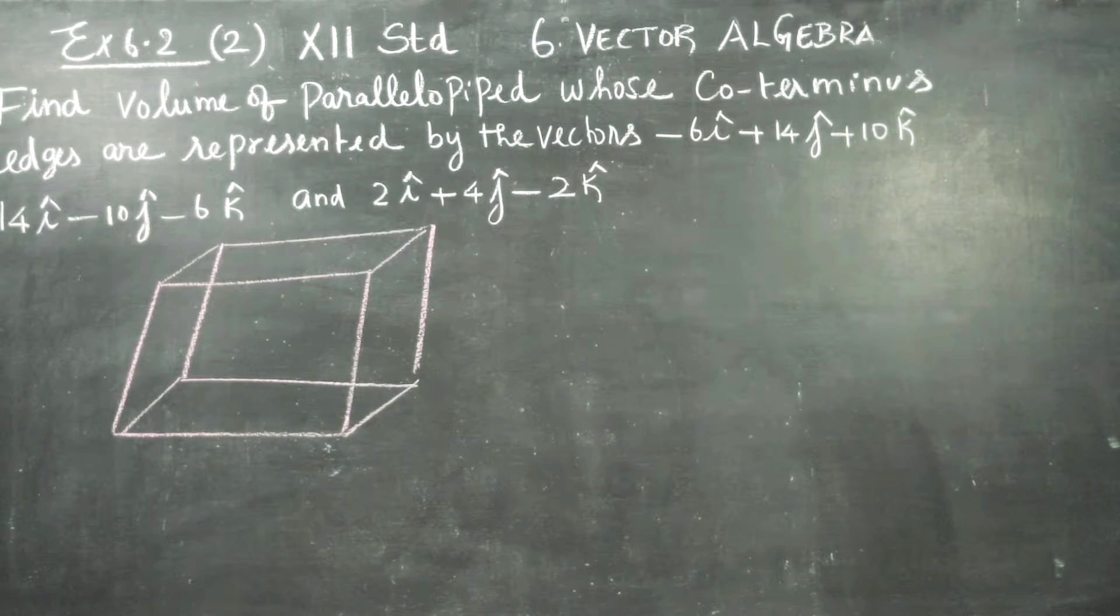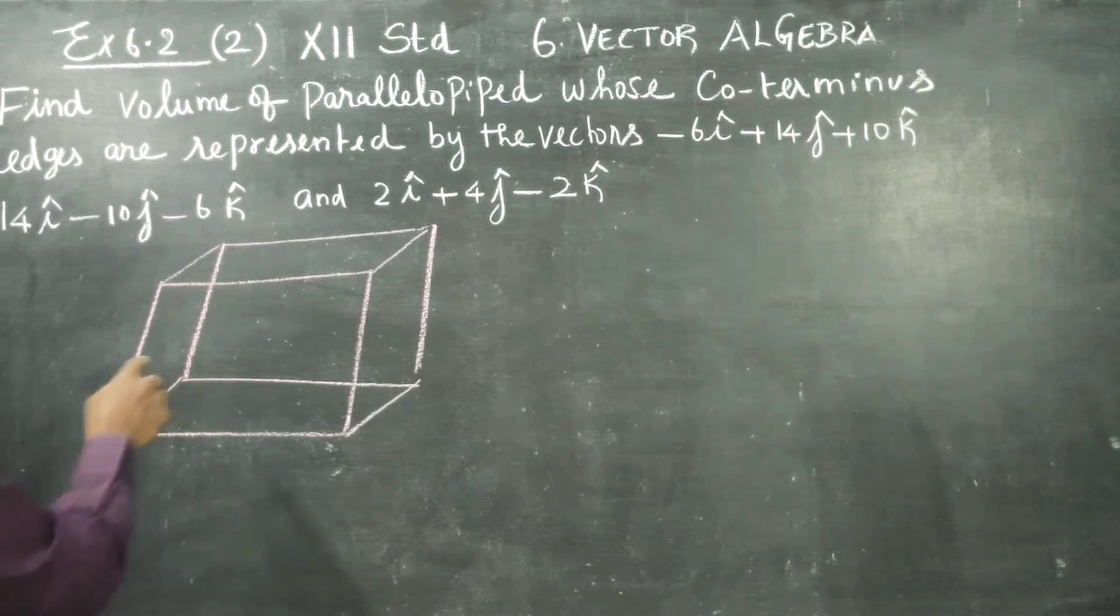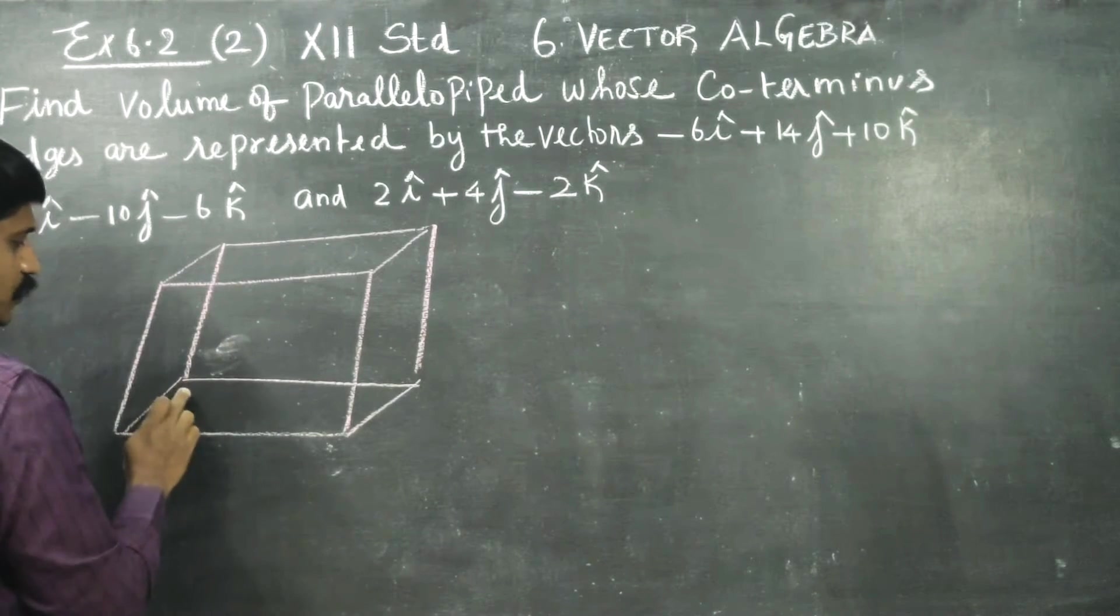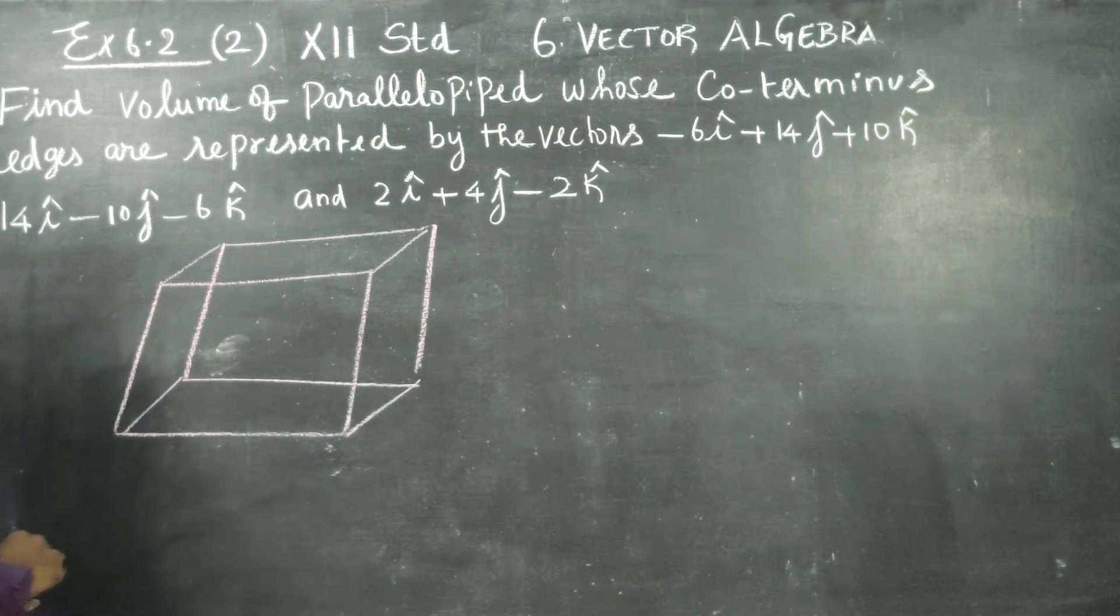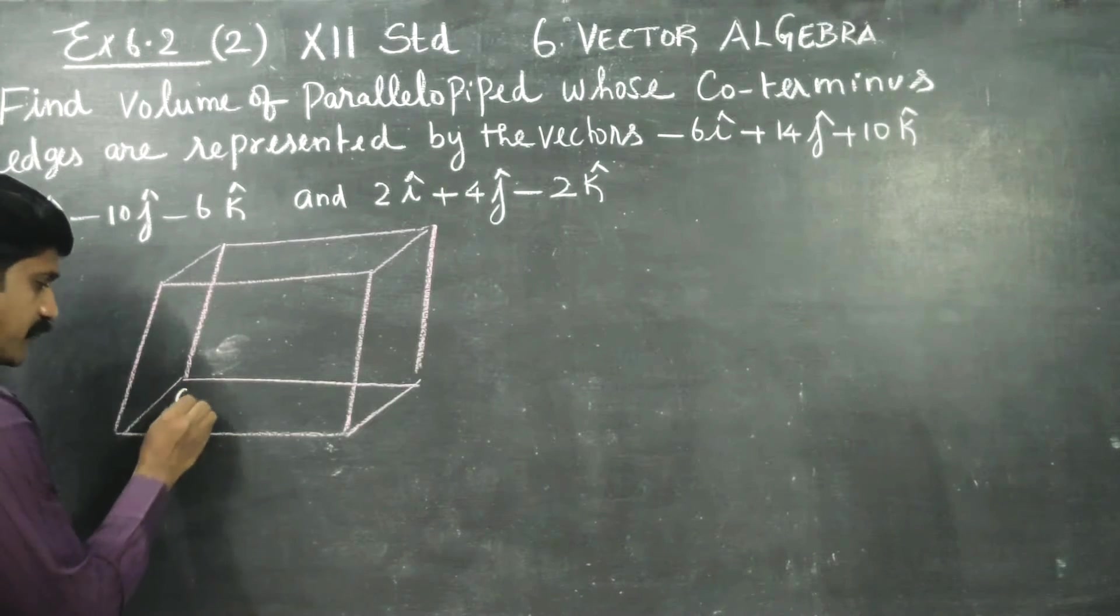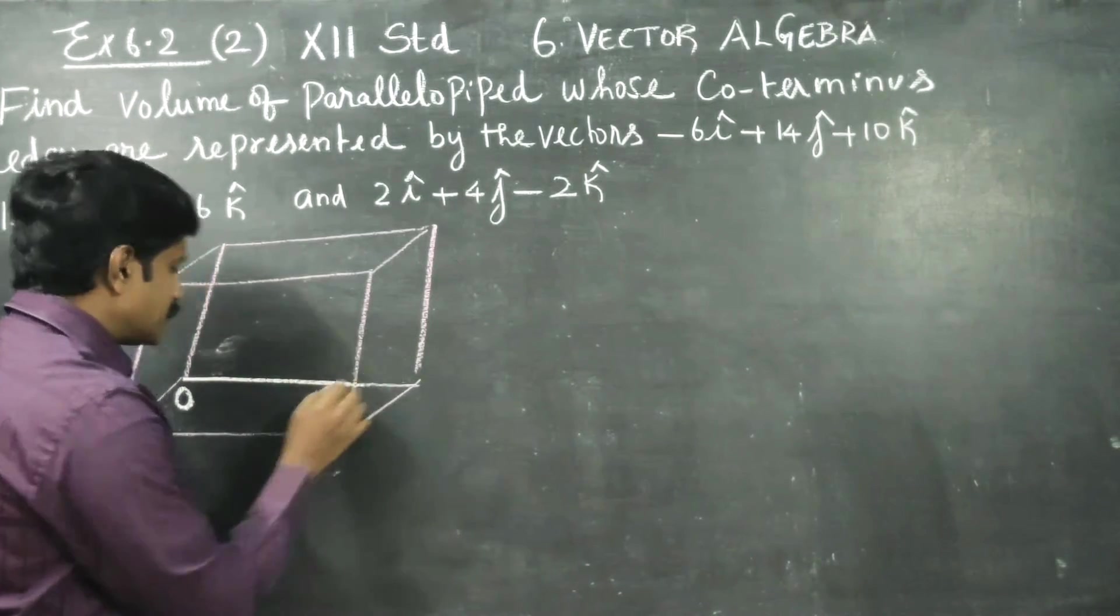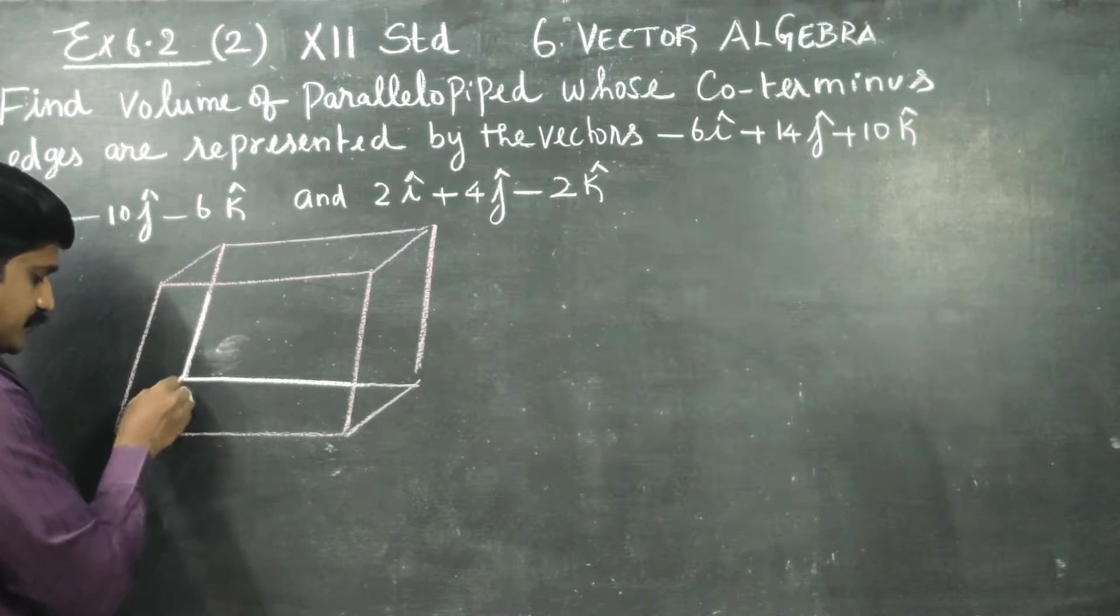If it's straight, it will become a cuboid. This is slightly tilted. This will not be 90 degrees. This is not 90, this is not 90, this is not 90. This is my point of reference, O vector. This is one edge, this is one edge, this is one edge.